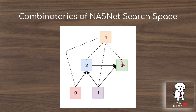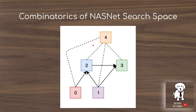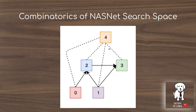Adding a fourth hidden state creates all sorts of different combinatorics. As this explodes up to seven — since they constrain hidden representations to five, so states two through six — by the time you get to six, there are already around five-factorial different input combinations to select from for that layer. That's multiplied by the number of operations considered for each edge, such as 3x3 convolutions, 5x5 convolutions, and more.